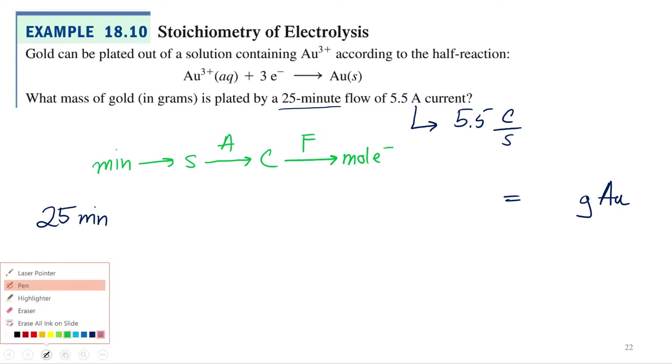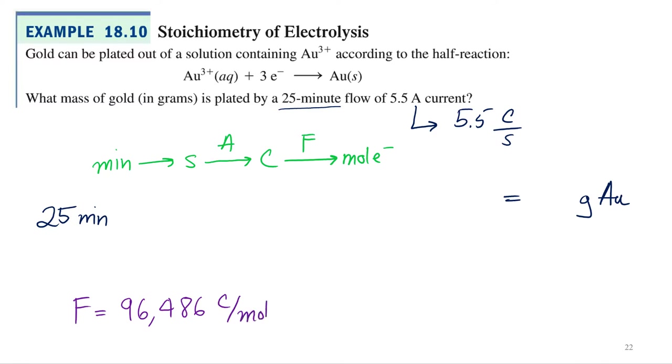And if we remember, Faraday's constant, F equals 96,486 coulombs per mole electron.